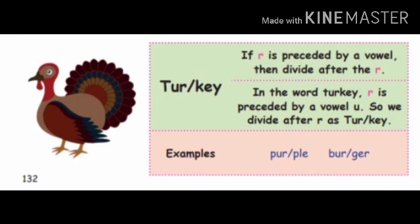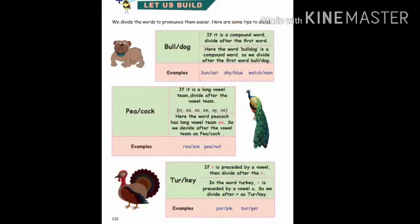There are some more examples. Purple — P-U-R-P-L-E — R is preceded by vowel U, so after R we divide the word. Likewise, burger — B-U-R-G-E-R — after R we divide. Some more words: worker, person, surprise — all these words should be divided after the letter R.